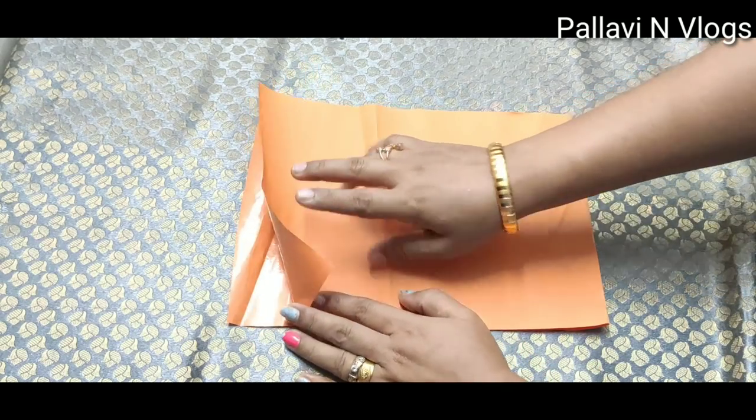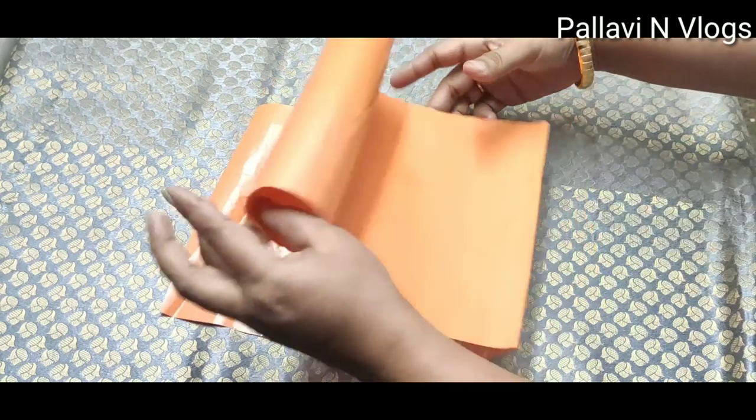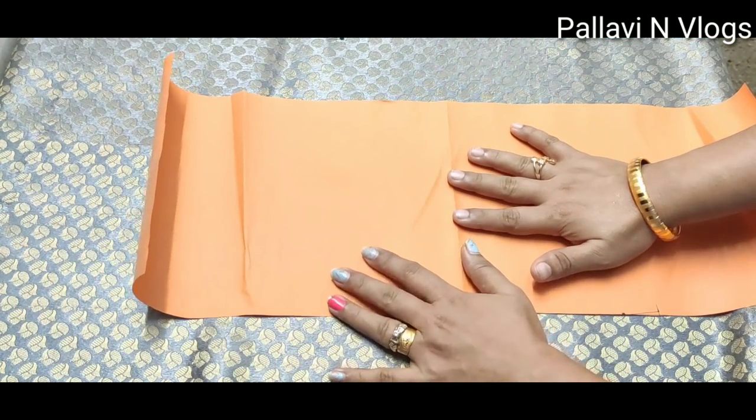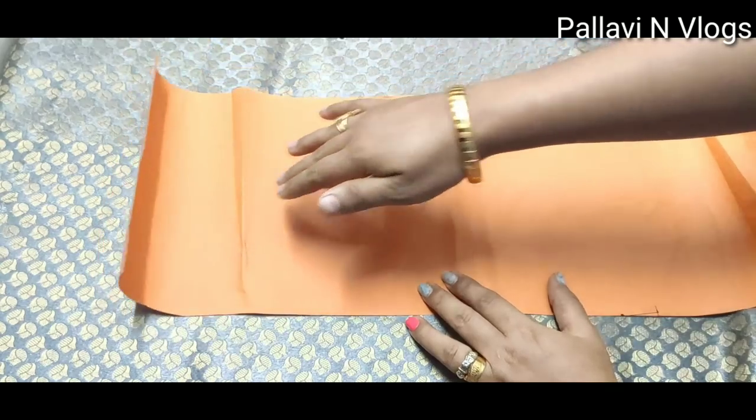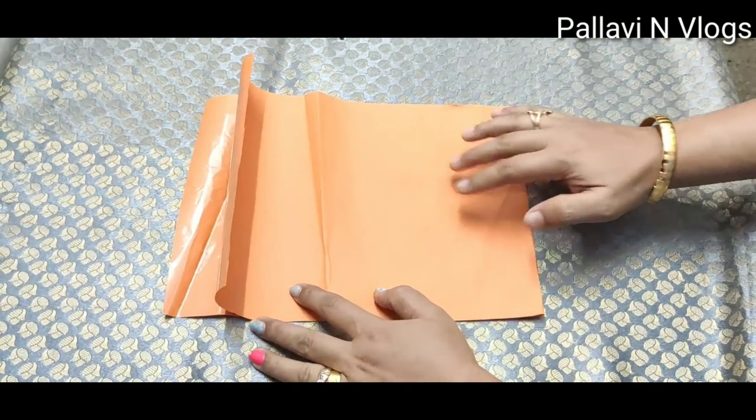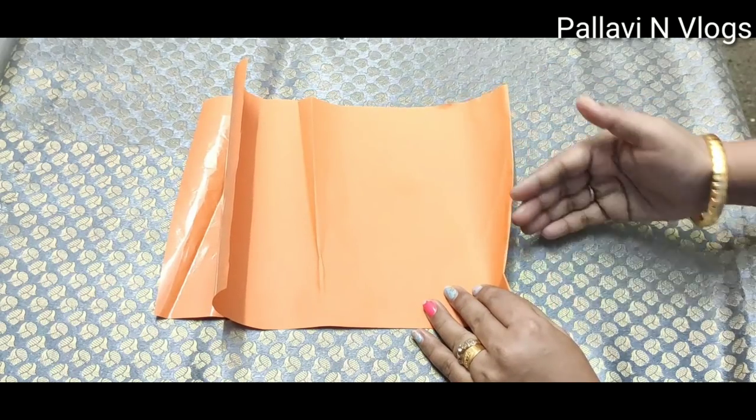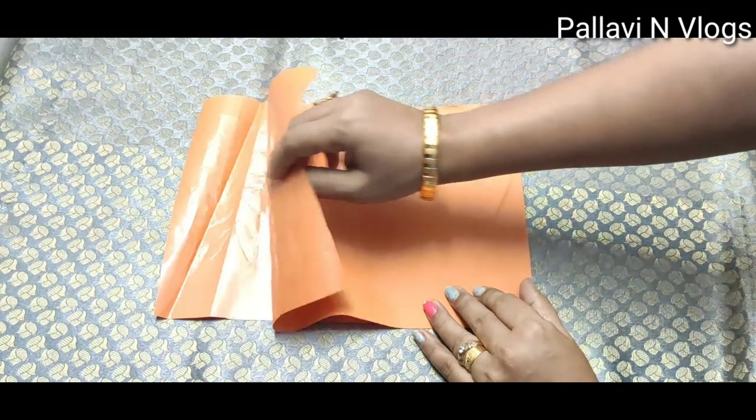For any sleeves, you will need two pieces of fabric. I will put two fabrics here. I will take the paper cutting and place it here. Then I will put the opposite side here.